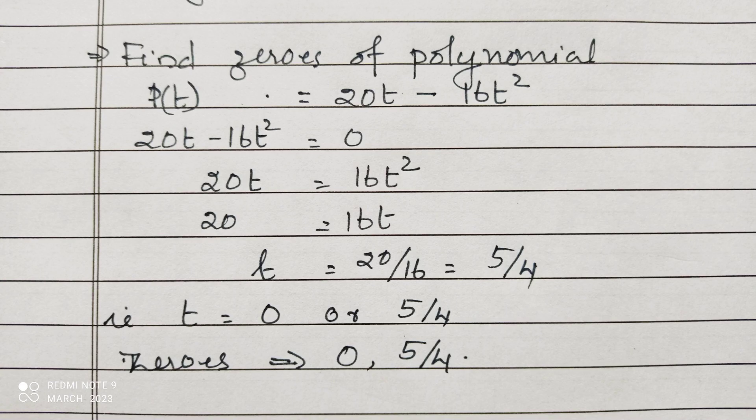Taking 16t² to the other side, 20t = 16t². Cancelling one t, then 20 = 16t. We are finding t from there. It is 20/16, the answer is 5/4.